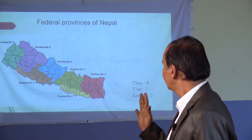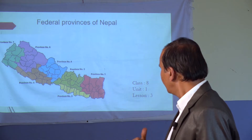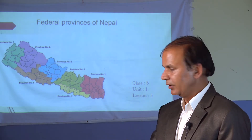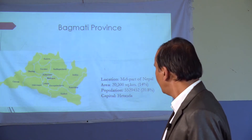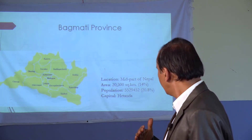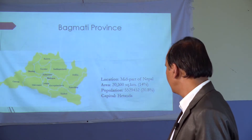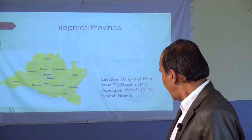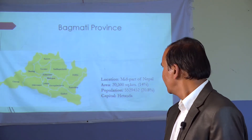In that lesson, we learned about the physical features of Province Number Two, its natural resources, economic activities, what people do there, major cultivation areas, food crops and cash crops grown there, general features, possibilities for development, and hindrances to the development of Province Number Two.